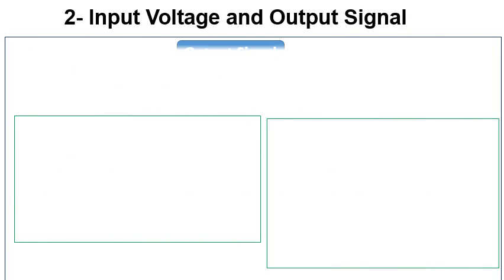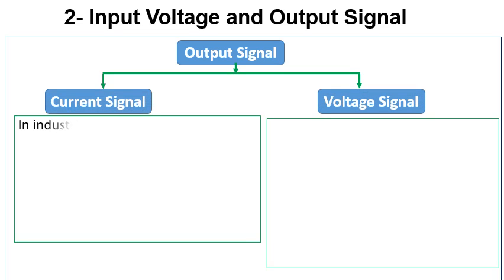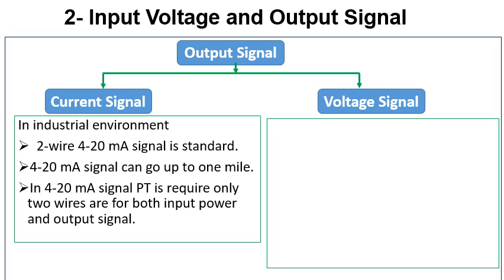Pressure transmitters come with two types of output signal: voltage output and current output. In industrial applications where there are long distances between the pressure sensor and the control system, the two-wire 4 to 20mA current signal is standard. This 4 to 20mA signal can travel up to 1 mile. One more advantage of the 4 to 20mA signal is that it requires only two wires for both input power and output signal.